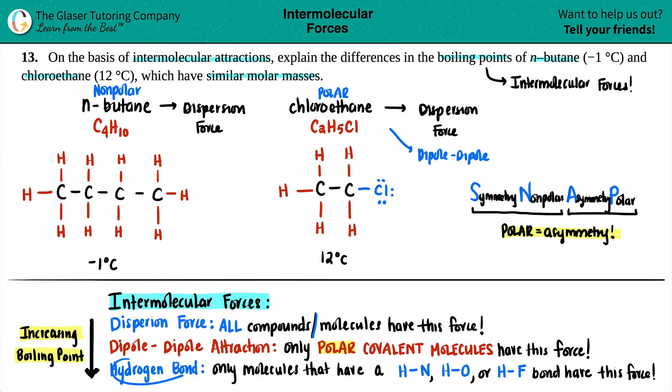The last intermolecular force is the hydrogen bond, which is the most specific. You have to have specifically a hydrogen that's bound to the most electronegative elements on the periodic table. So that's H with N, H with O, and H with F. No exceptions. But here, all of my hydrogens are bound to a carbon. That's not the same as nitrogen, oxygen, or fluorine. So there's no hydrogen bonding here.